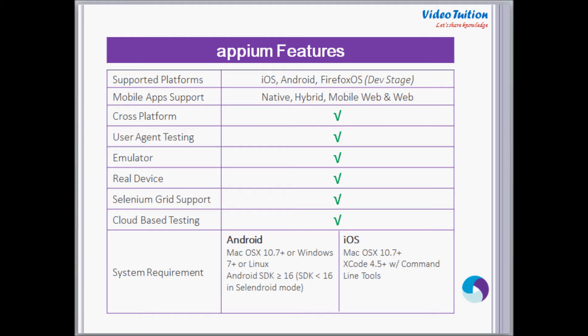Appium allows testing for native, hybrid, mobile web, and web applications for multiple mobile operating systems. One simple solution for testing mobile applications using a web browser is the user agent approach. To find out more about the user agent approach, please check my video channel. With Appium, we can automate mobile application test scenarios using Firefox or Chrome desktop browsers.